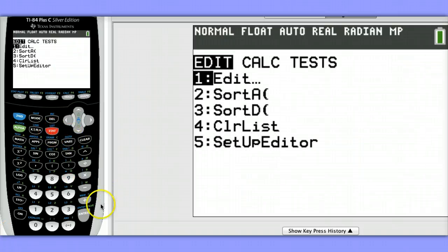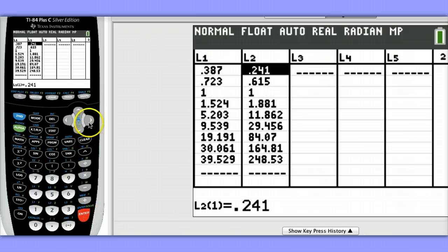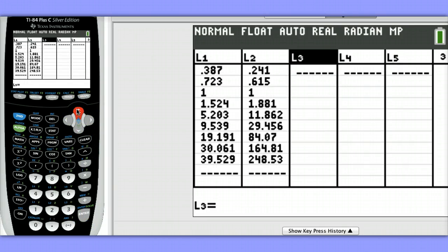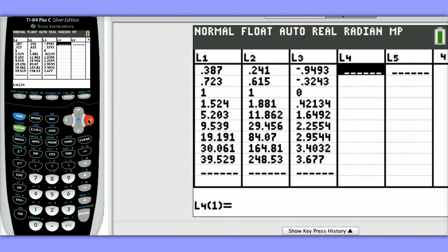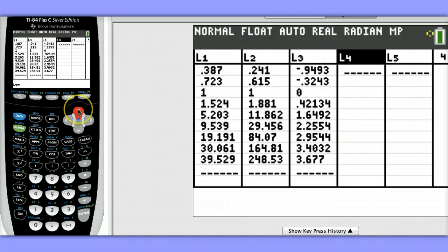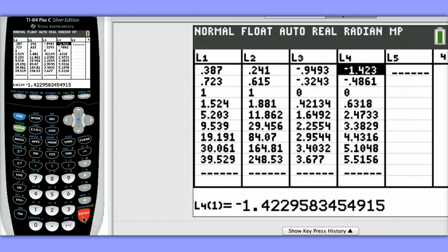To do this, hit Stat, Enter on Edit. Go over to the very top of List 3, and we're going to define List 3 to be the natural log of List 1. Hit LN, then hit Second, and the 1 button to get List 1. And List 4, we're going to define to be the natural log of List 2. Once again, LN, then Second, and hit the 2 button.